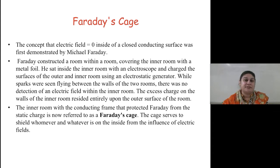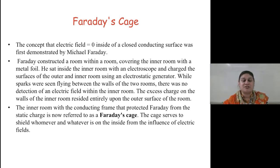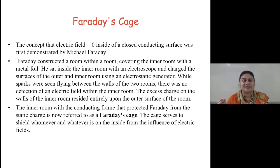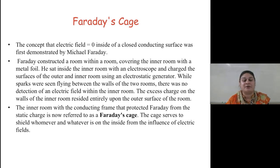Faraday's cage. The concept that the electrical field equals zero inside a closed conducting surface was first demonstrated by Michael Faraday. Faraday constructed a room within a room, covering the inner room with metal foil. He sat inside the inner room with an electroscope and charged the surfaces of the outer and inner rooms using an electrostatic generator. While sparks were seen flying between the walls of the two rooms, there was no detection of an electrical field within the inner room. The excess charge on the walls of the inner room resided entirely upon the outer surface.